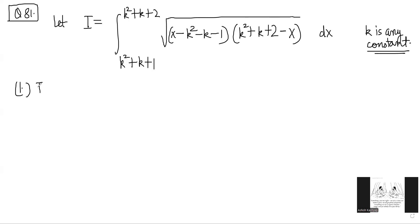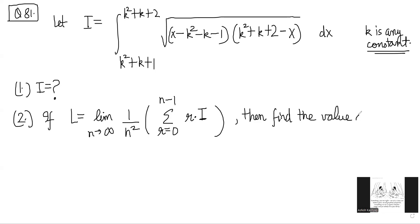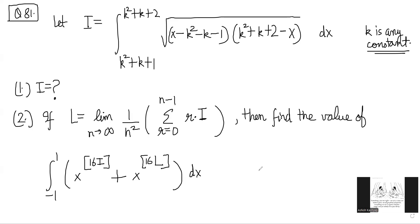The first part of the question is asking us to find the value of i. The second part says: if L is equal to the limit as n tends to infinity of (1/n²) times the summation of r going from 0 to n − 1 of r times i, then find the value of the integral from −1 to 1 of x to the power gif(16i) plus x to the power gif(16L) dx. Here, gif means the greatest integer function.